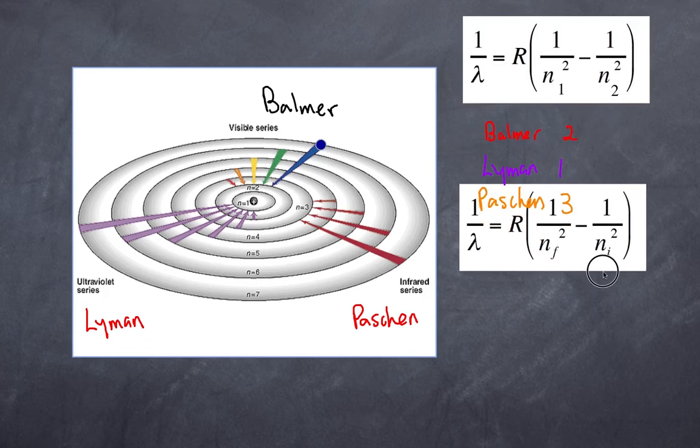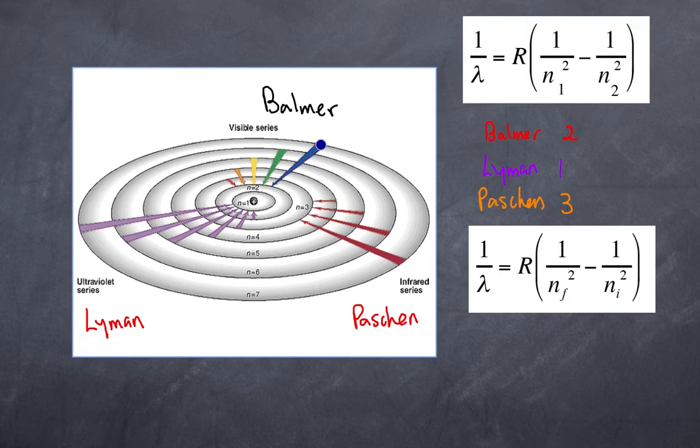So now we slightly modify the formula. Here's our formula again, but what you notice now—instead of 1 and 2—we have NF, which stands for final, and NI being the initial. So if I have my electron moving from this shell, N6, moving down to N2, my final is 2, my initial is 6, and the green would represent the wavelength that I would get in that calculation. Using an understanding of spectral lines, Bohr was able to verify his postulates in terms of the model of the atom.